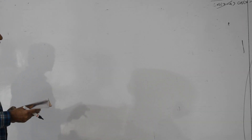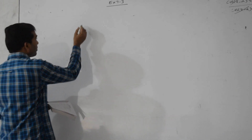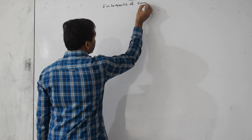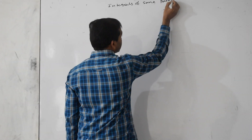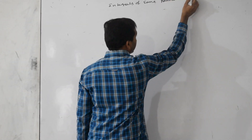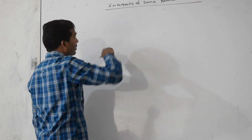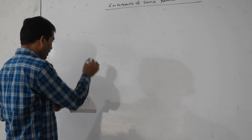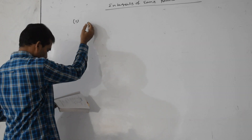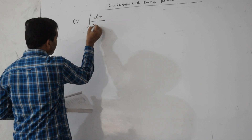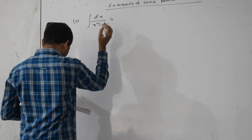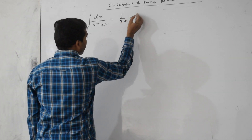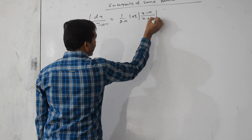Now let us start Section 7.4: Integrals of Some Particular Functions. This is the most important section — 5 marks portions will come from this area. The first formula is: integration of dx by (x² minus a²) equals 1 by 2a times log of (x minus a) by (x plus a) plus c.